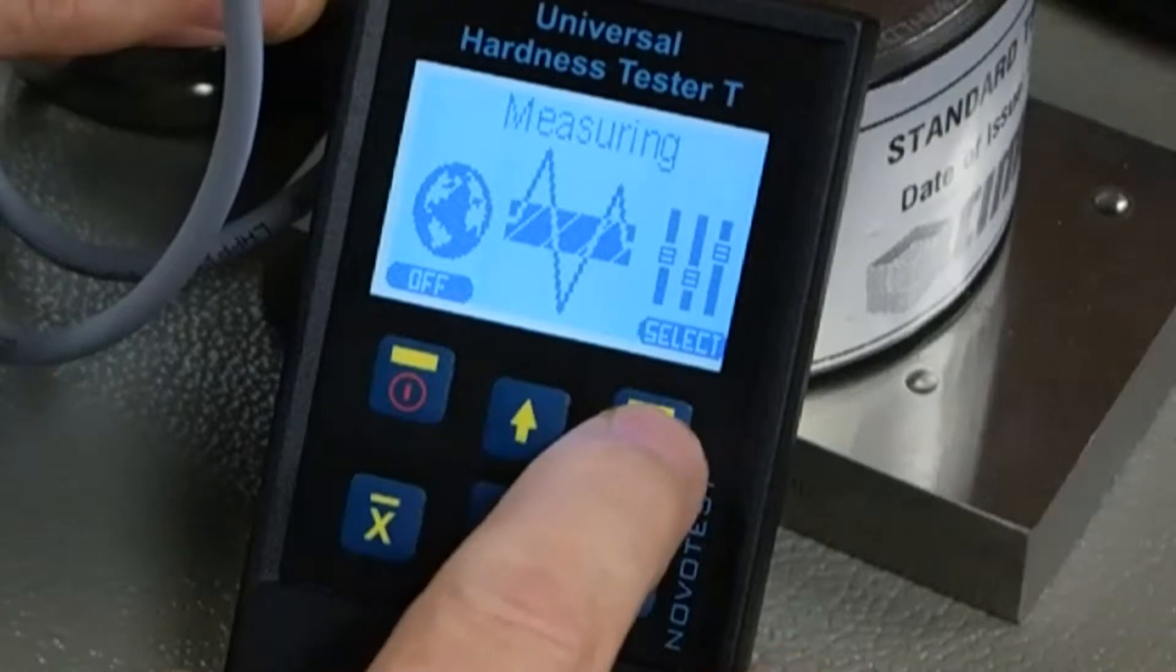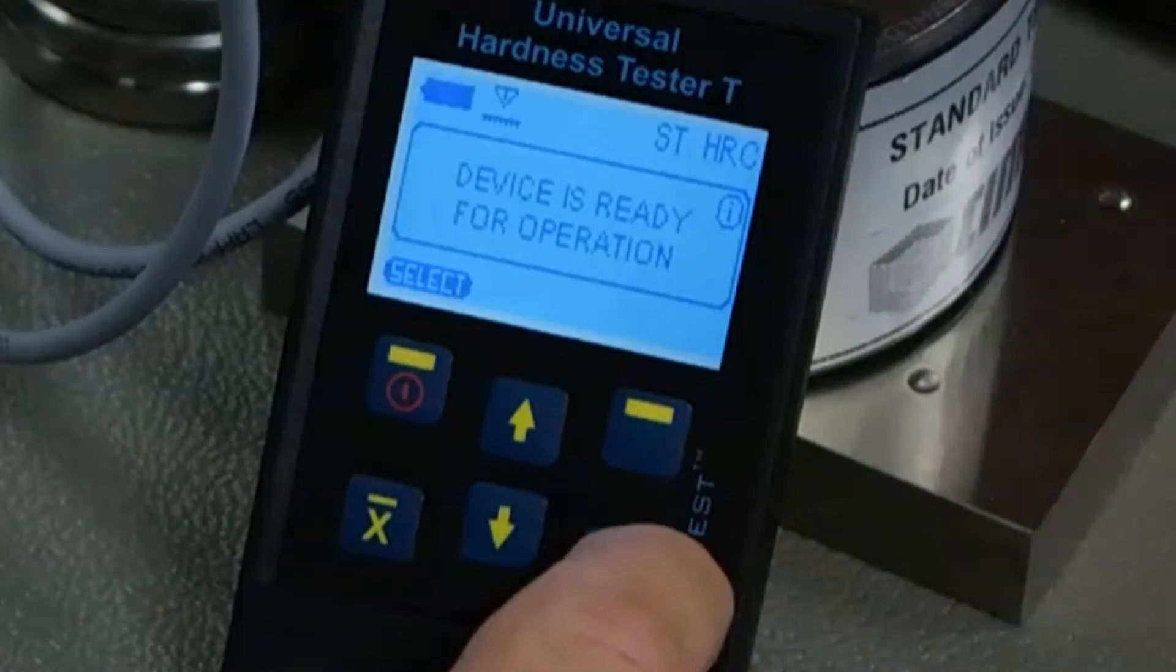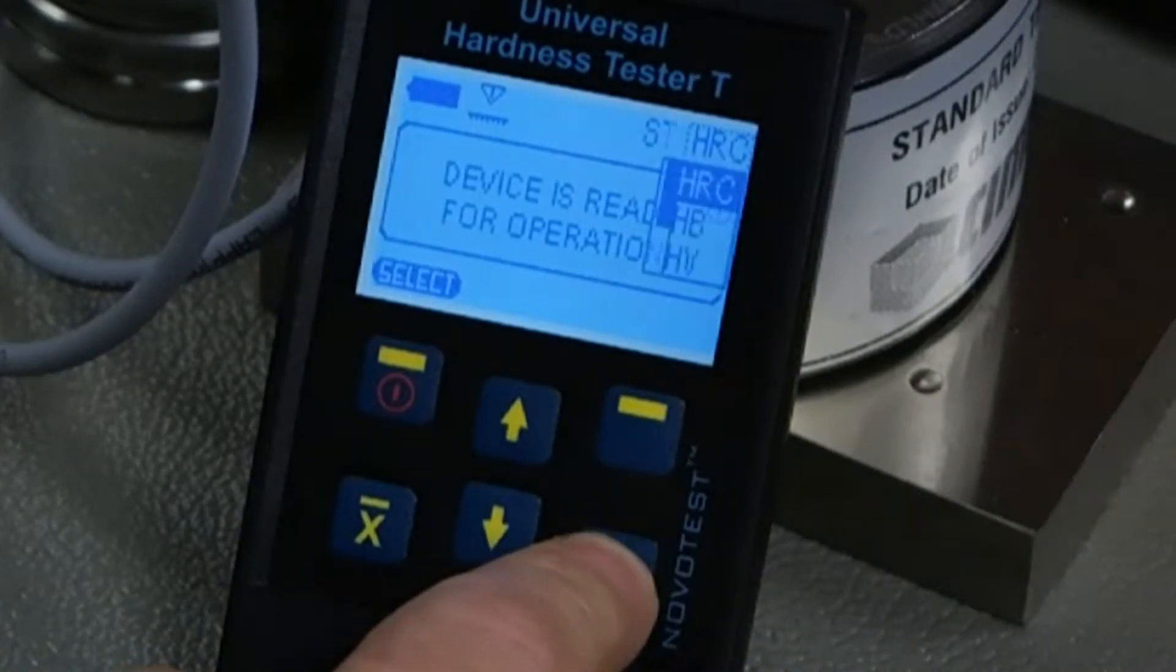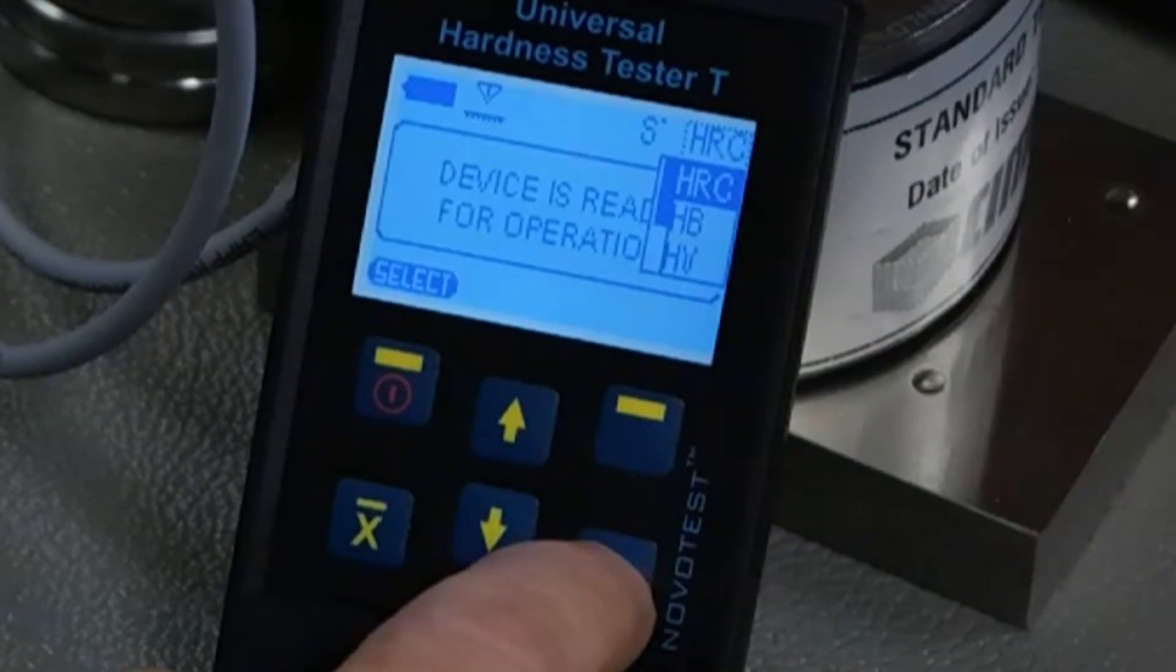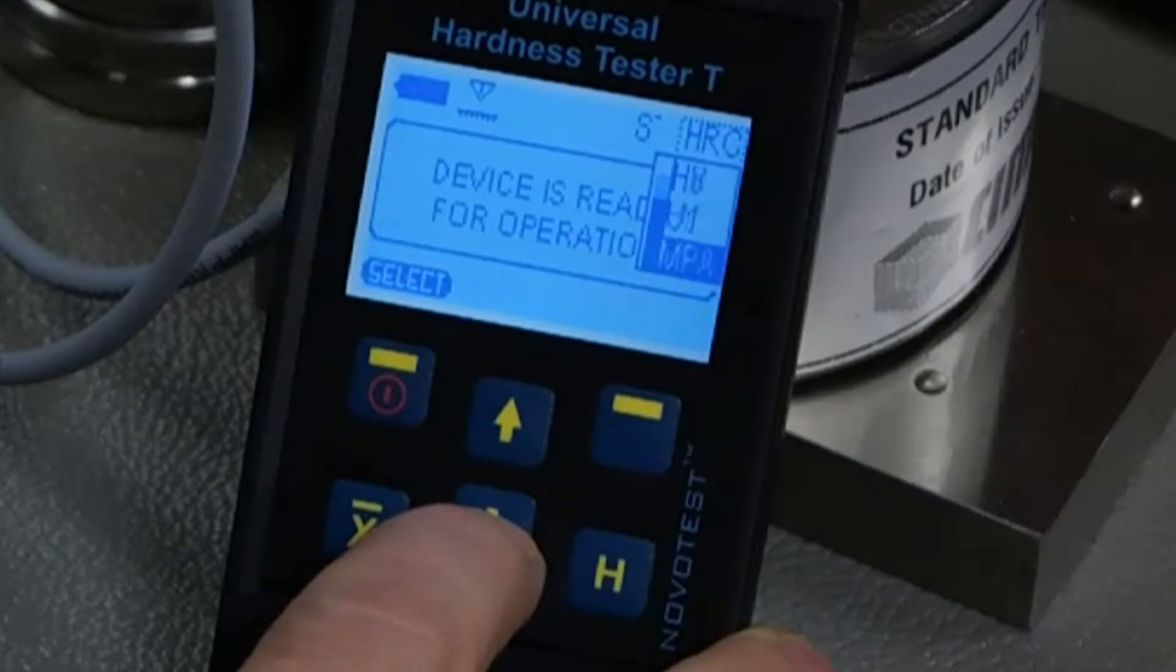If we go back to measuring and hit the select button, the device now is saying it's ready for a test. I can hit the H value button and change the hardness value for HRC and HB, and then in Vickers. I can scroll down these to choose a different one, even user definable.